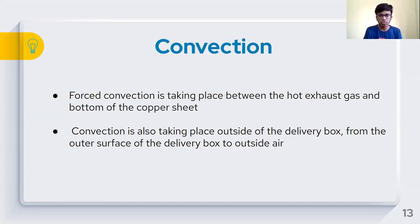Convection is the transfer of heat from one place to another due to the movement of fluid when there is a temperature difference. In the problem statement, forced convection is taking place between the hot exhaust gas to the bottom of the copper sheet which is further transferring heat to the food packet. Convection is also taking place outside the delivery box from the outer surface to the outside air when the vehicle is moving at a velocity. We have neglected the free convection between the pizza or food box and the air inside the delivery box because the volume is very small and free convection could not be set up.